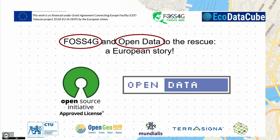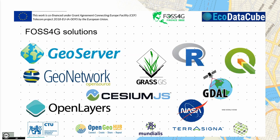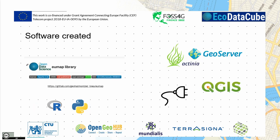The main elements are PhosphorG and open data. These are the tools we used within the project. We also developed some open source software: a QGIS plugin, a plugin for Actinia, for GeoServer, and also a UMAP library. I will not go into detail here, but you are welcome to check our GitLab.